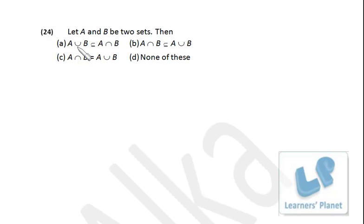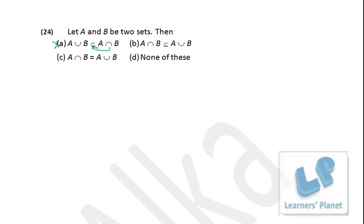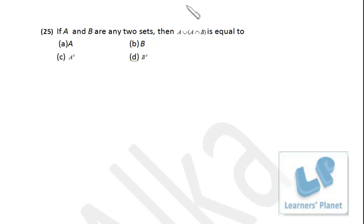Let A and B be two sets. Is A∪B a subset of A∩B? That is not at all possible. In any case, the A∪B set will be greater than or equal to A∩B, so it cannot be a subset. A∪B can be equal to A∩B only when A equals B. But A∩B is a subset of A∪B — that is correct, because all the common elements between A and B will definitely be part of the union.